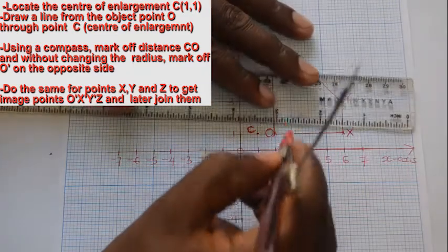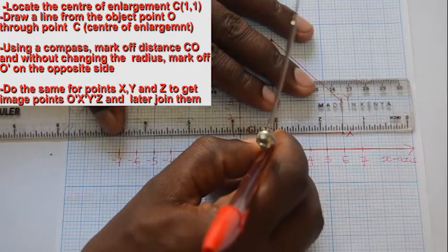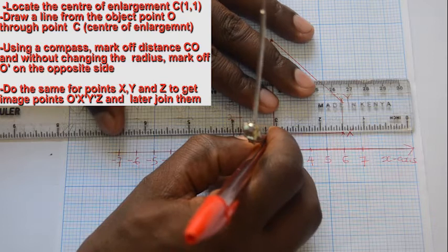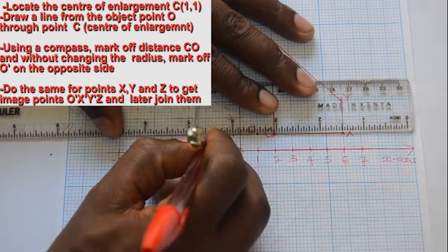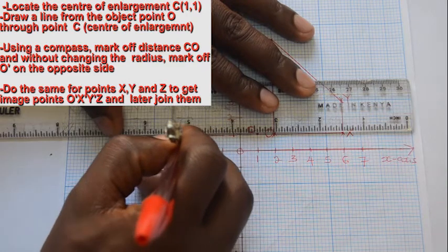Using a ruler, draw a straight line from point O through the center of enlargement.